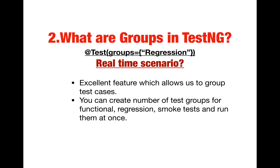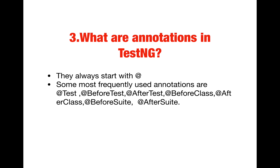You can have a smoke suite group, or group test cases by functionality — for example, all login functionalities under a group named 'login'. Whenever you want to run regression for that module, you kick off that group from your XML file. No matter how many classes your test cases are in, they all run in one step. In real time, we usually have regression and smoke groups, and sometimes functionality-wise groups as well.